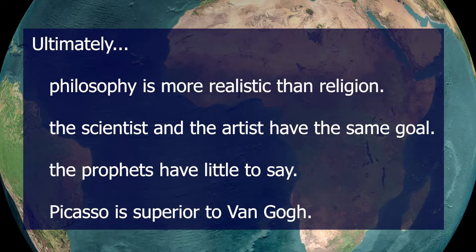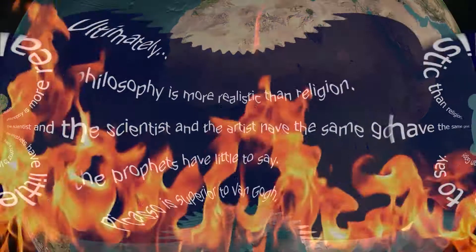And one more difference: eventually is used only when we're talking about the passage of time. Ultimately can be used when we're talking about a logical development. Here are some provocative conclusions. Ultimately, philosophy is more realistic than religion. Ultimately, the scientist and the artist have the same goal. Ultimately, the prophets have little to say. Ultimately, Picasso is superior to Van Gogh.